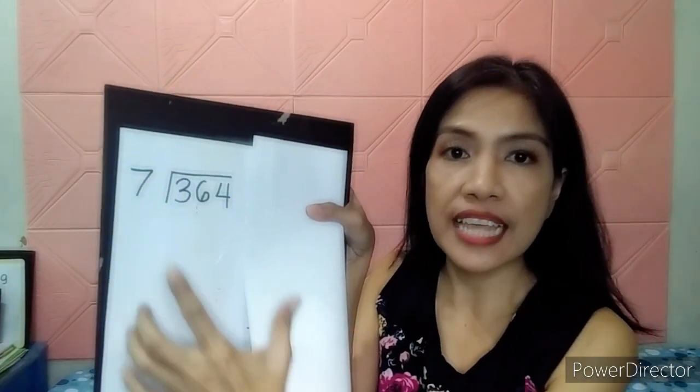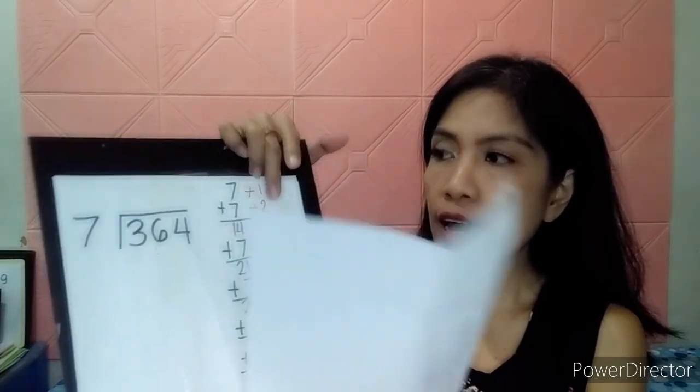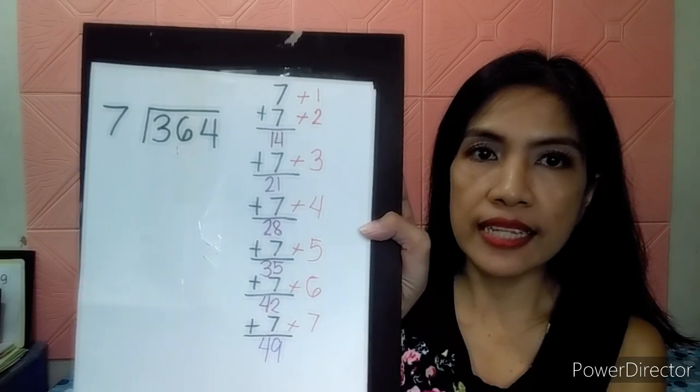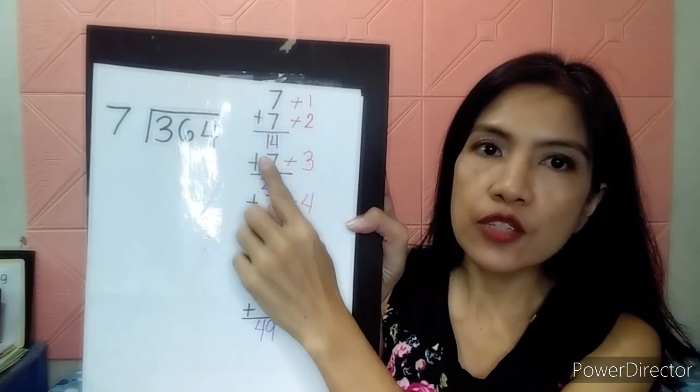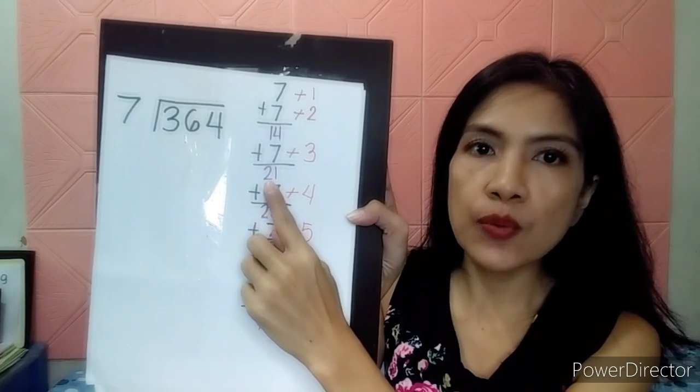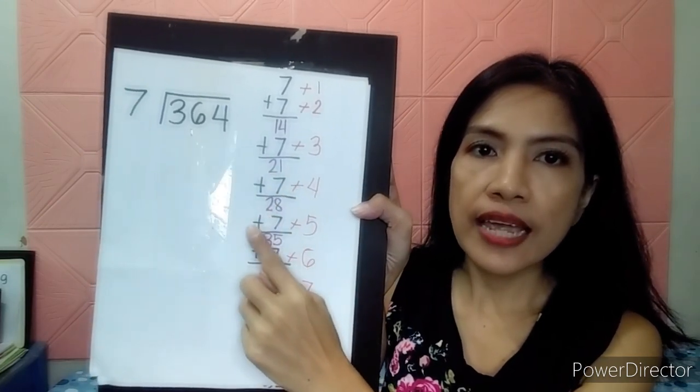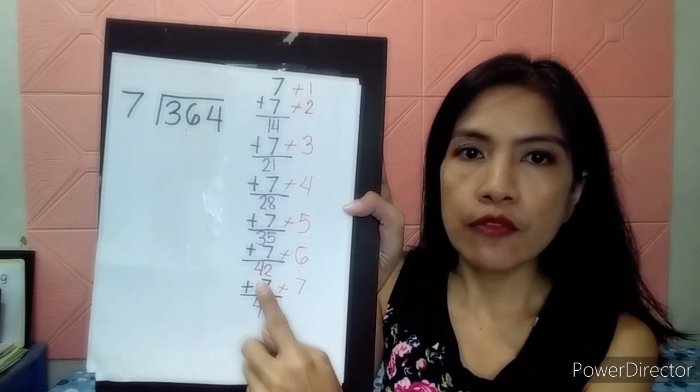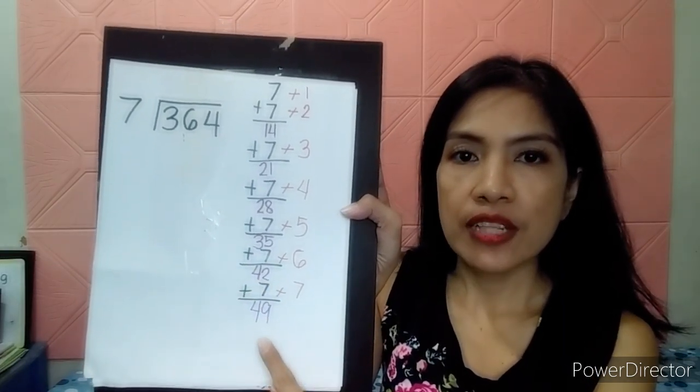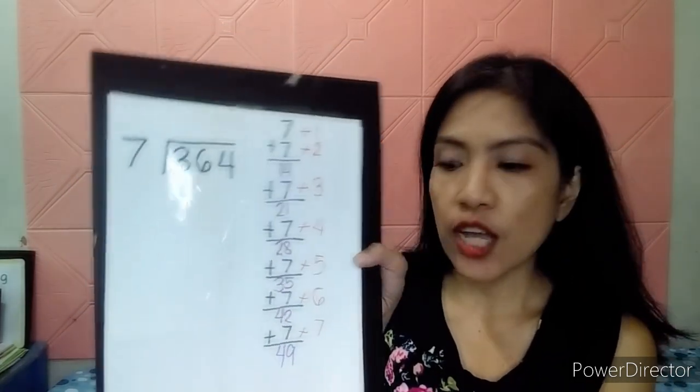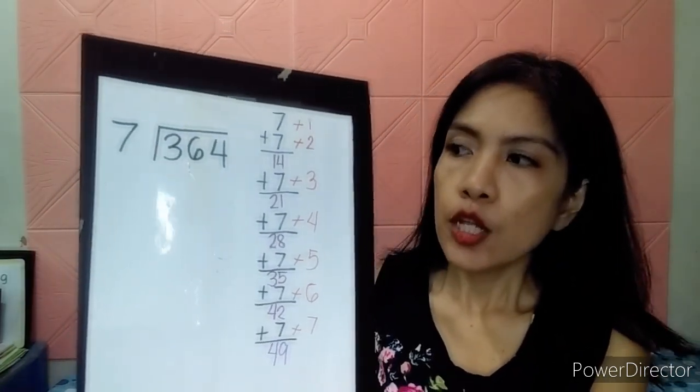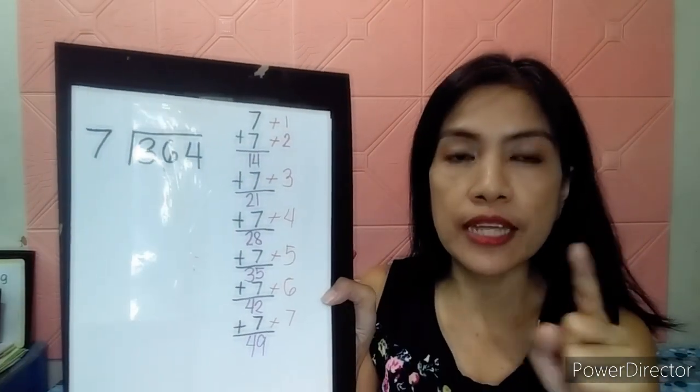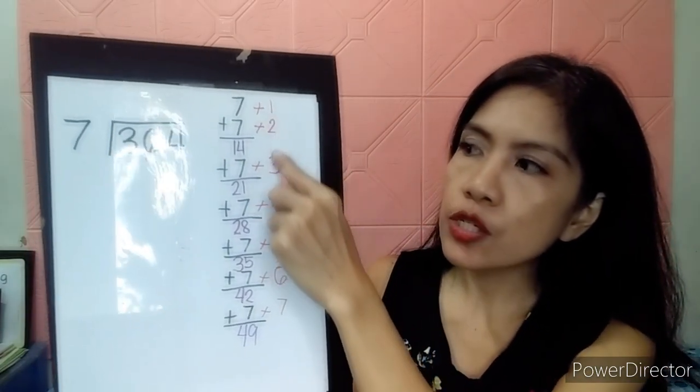The divisor here is 7, so I asked her to do repeated addition, and she was able to do the repeated addition like this. She did 7 plus 7 is 14, 14 plus 7 is 21, 21 plus 7 is 28, 28 plus 7 is 35, 35 plus 7 is 42,